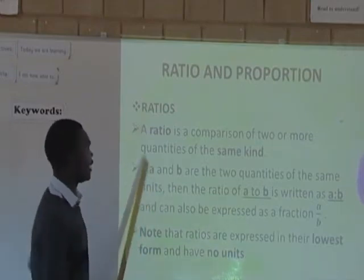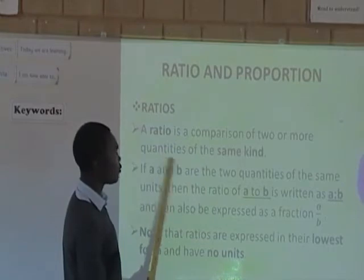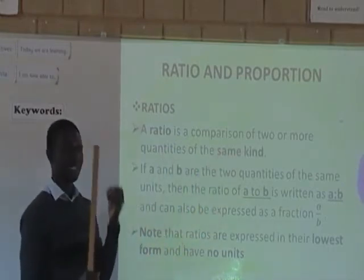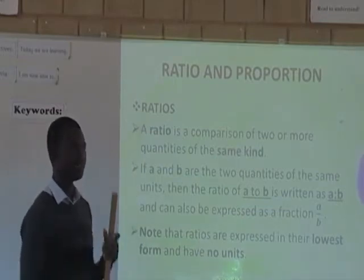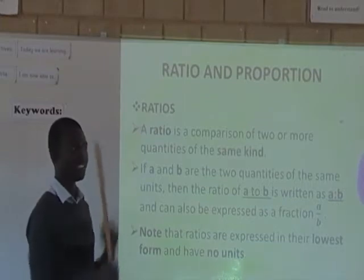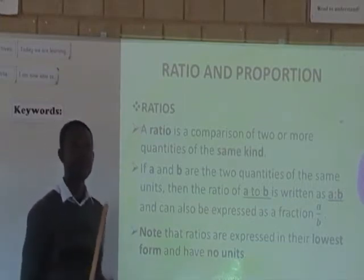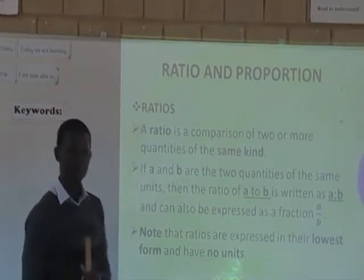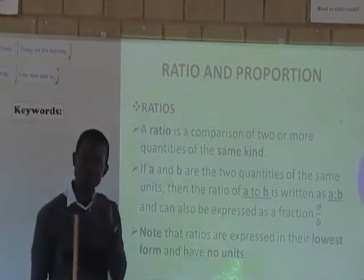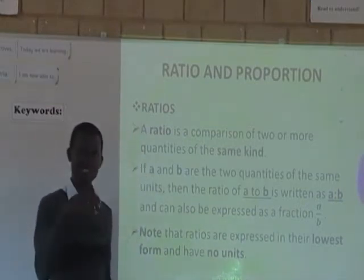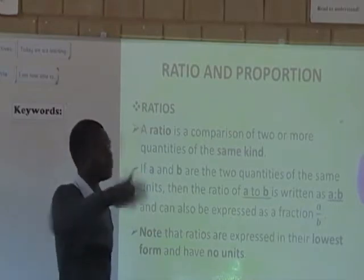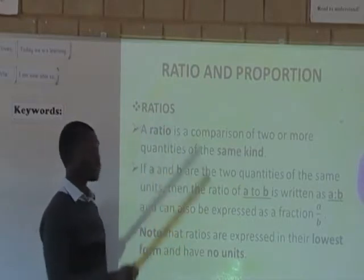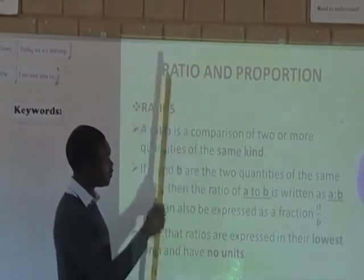What is a ratio? A ratio is simply the comparison of two or more quantities of the same kind — that is, quantities in the same unit of measure. If it's meters, meters; kilometers, kilometers. If they are different units, then you have to convert. Remember, the way people think about it is as composition, where we are comparing items or quantities. But in the actual sense, it is not composition — it is comparison.